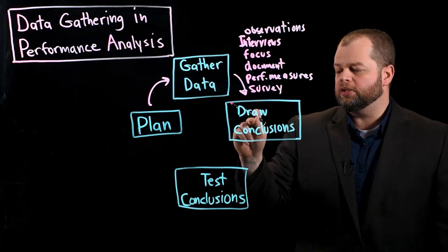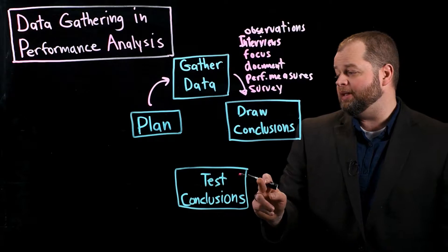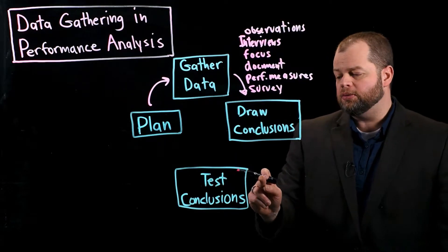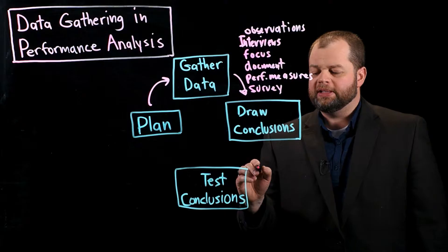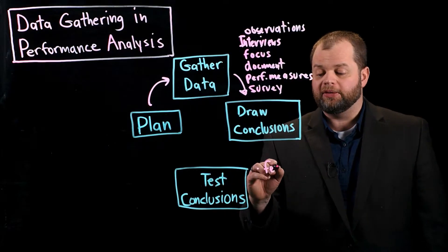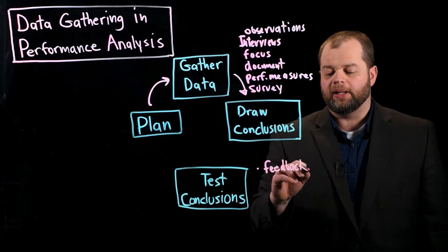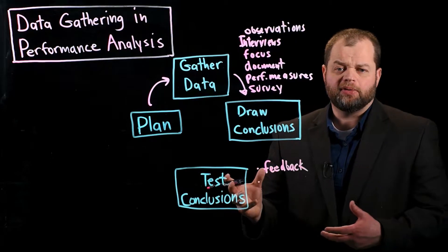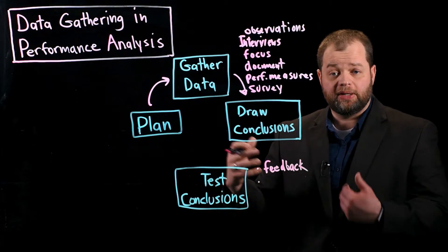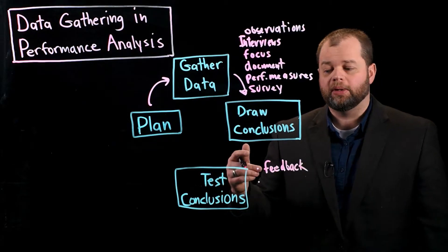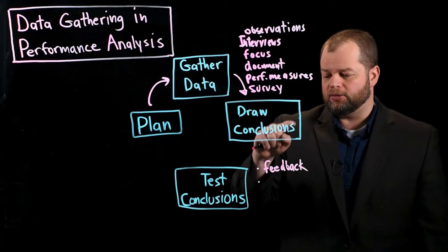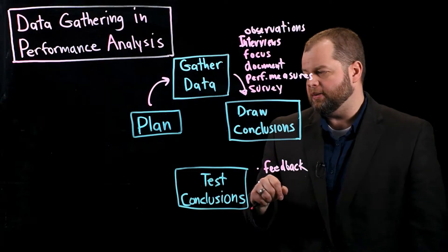So once you have a sense for those conclusions, the next step is really to test those conclusions. And there are a few different ways to do this. The first is just to get feedback, particularly from your client or some of the other stakeholders that you might have been working with. Just present some of your thoughts and get their reflection, and they might actually give you more feedback and help you refine what's going on. So in this way, you're really going back to gathering a little more data and refining those conclusions that you have.